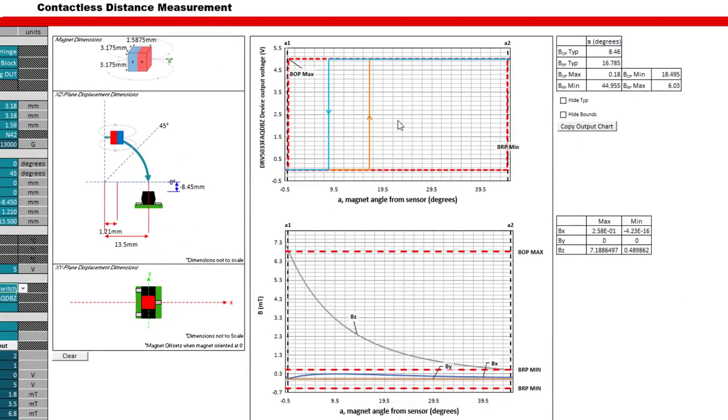Here we can see that while our typical transition points are within the design goal, BOPmax and BRPmin are not. To address this, we could consider a device with higher thresholds.